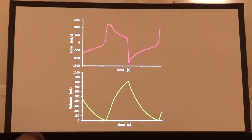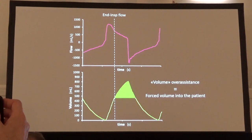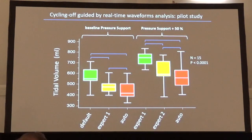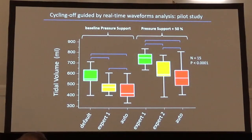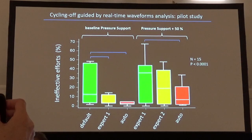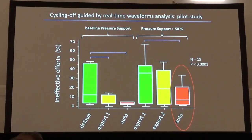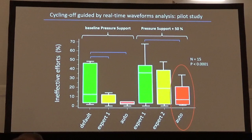A collateral effect of better cycling in our patients was a decrease in what I call the volume of over-assistance. We observed a lower tidal volume at both pressure support levels and easier triggering for our patients. However, the number of ineffective efforts was still too high, especially at the higher pressure support level. So, could we profit further from waveforms to improve synchronization?